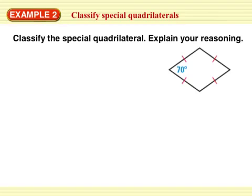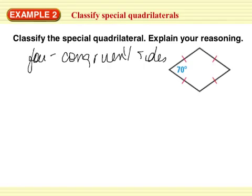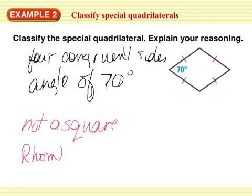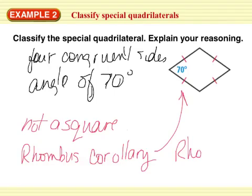Classify the special quadrilateral — explain your reasoning. Looking at this quadrilateral: it has four congruent sides and one angle of 70 degrees. We are not a square because the angles would have to be 90. So by the rhombus corollary, this quadrilateral is a rhombus, and that's all it can be.